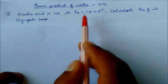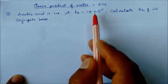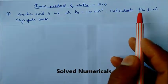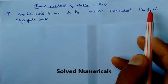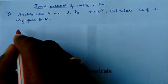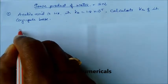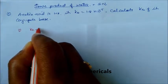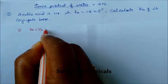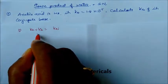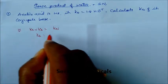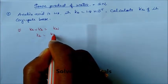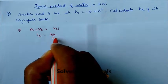The Ka of acetic acid is given as 1.8 × 10⁻⁵ and we have to calculate the Kb of its conjugate base. We know the formula: Ka × Kb = Kw. So Kb will be equal to Kw divided by Ka.